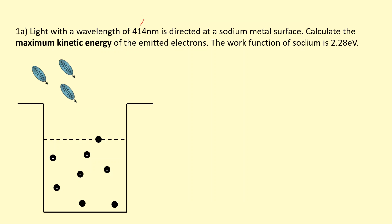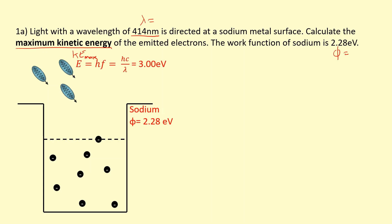In this question, we've got light with a wavelength of 414 nanometers which is directed at a sodium metal surface. We need to calculate the maximum kinetic energy, KE_max, of the emitted electrons. The work function of sodium is 2.28 electron volts — that's the minimum energy required to escape. Using that wavelength, we can figure out the energy of each photon using E = hf, which is the same as hc over lambda.